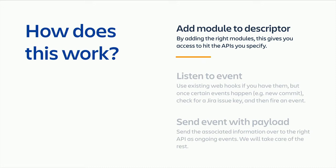Basically, all that module descriptor is saying is: tell us some information about this connection — the name of the service you're integrating, a URL to the home page, that kind of information. Once you've defined your module descriptor and built the app, you deploy it to the marketplace. Once it's in the Atlassian marketplace, it becomes discoverable by end users and administrators.